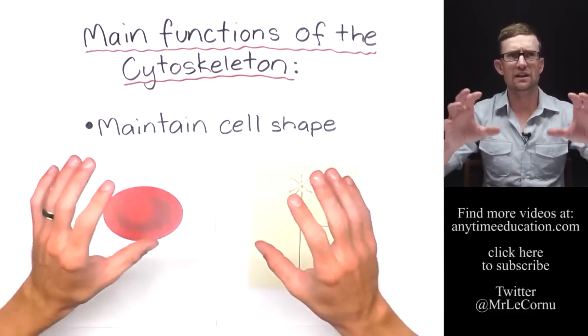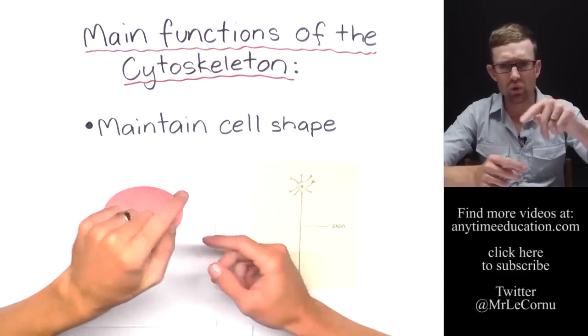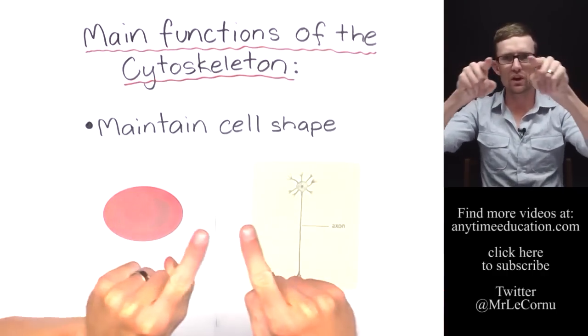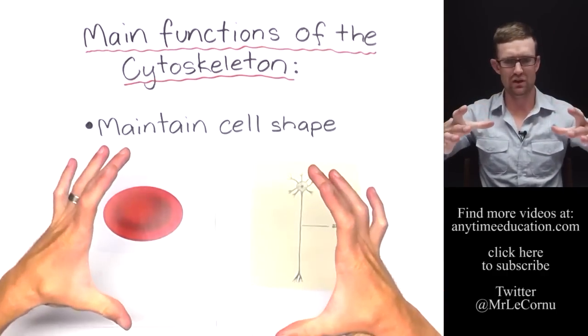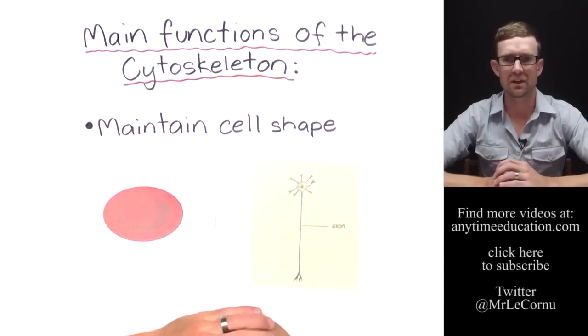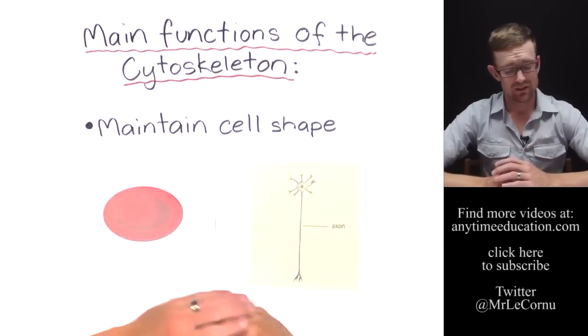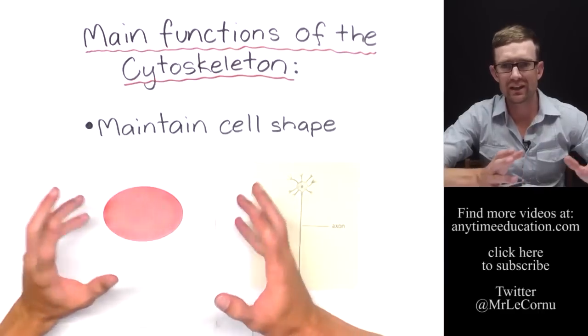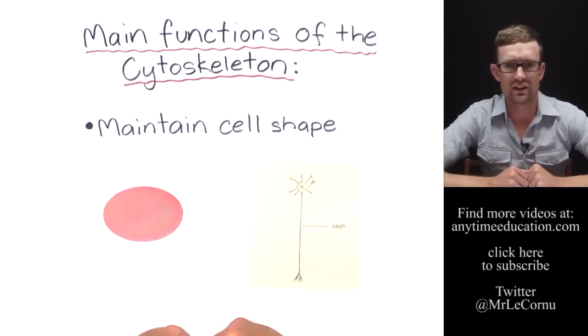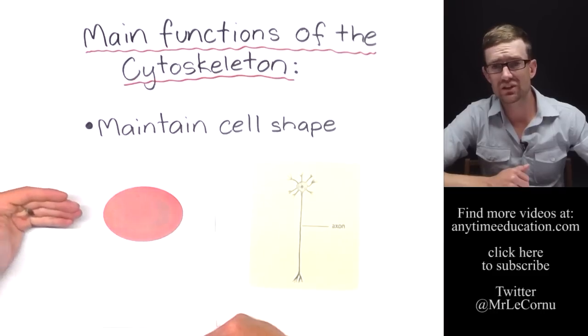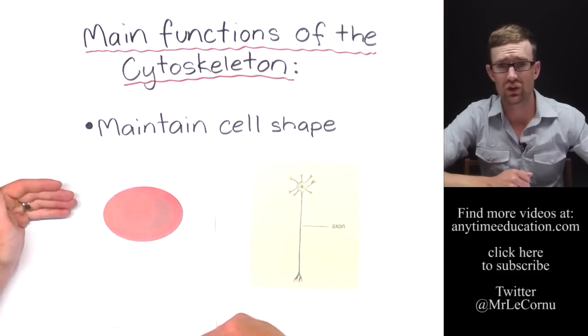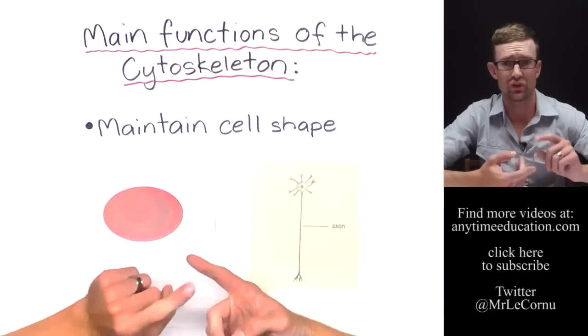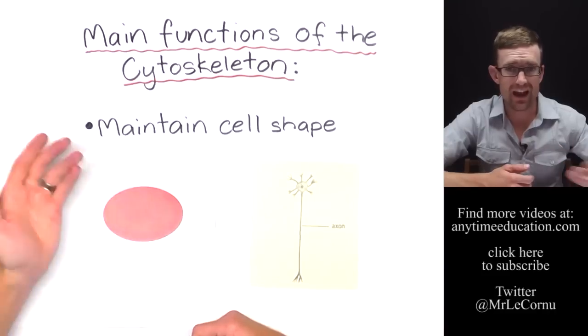Red blood cells have a shape or structure that's called a biconcave disc. It's essentially like if you imagine a donut where the hole in the middle hasn't gone all the way through. So it has that concave shape and it's round and flat like a dinner plate or a disc. That's why we call it the biconcave disc. That shape is assisted by the internal structure of the cytoskeleton. And what it does is it increases the surface area to volume ratio for the red blood cell, which then helps it to increase its efficiency of diffusion of oxygen into and out of the cell.